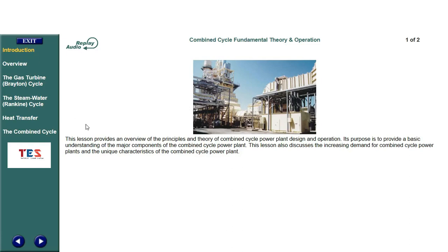This lesson provides an overview of the principles and theory of combined cycle power plant design and operation. Its purpose is to provide a basic understanding of the major components of the combined cycle power plant. This lesson also discusses the increasing demand for combined cycle power plants and the unique characteristics of the combined cycle power plant.